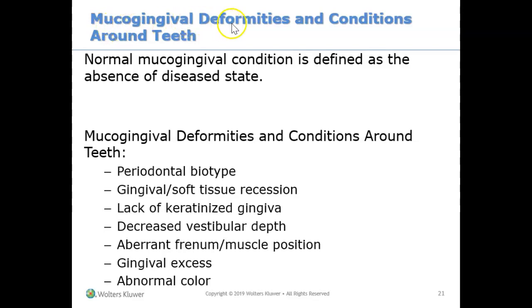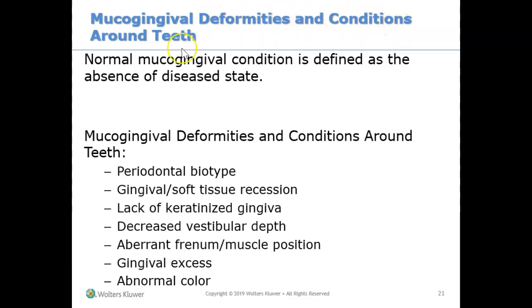This video will look at mucogingival deformities and conditions around the teeth. Mucosa comes from mucosa — think of your mucosa in your mouth, your alveolar mucosa, your gum. Think of the tissues surrounding your teeth, and when looking at those tissues around your patients' teeth, do you see any deformities or unique conditions? If so, we need to note and document that in our clinical forms.